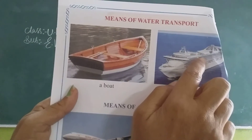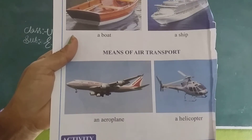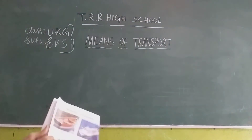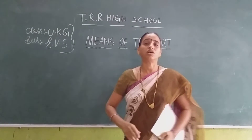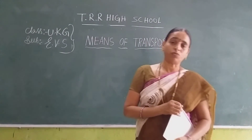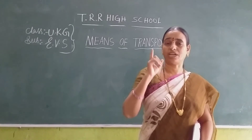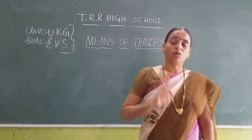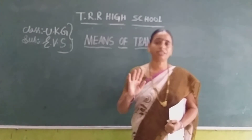Okay. These are water transport and these are air transport. I hope you understood, children, what is the means of transport. We have three types of transport — one is land, water, and air transport. I will meet you in the next class. Bye children.